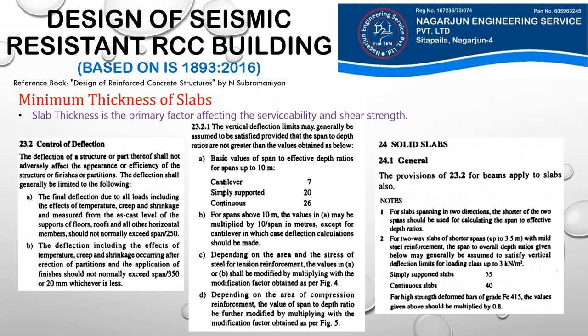Now let's look at the minimum thickness of slab. Since slab thickness is the primary factor affecting serviceability and strength, first we note that Table 16A in IS 456 gives the nominal cover of slab to meet a specified period of fire resistance. One serviceability factor affecting the thickness of the slab is fire resistance, given in Table 16A of IS 456.